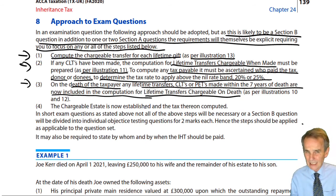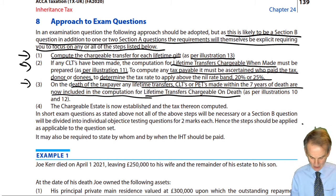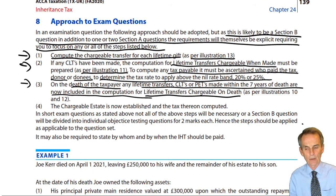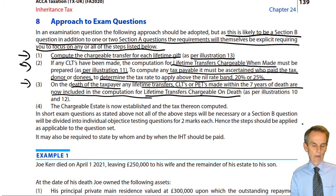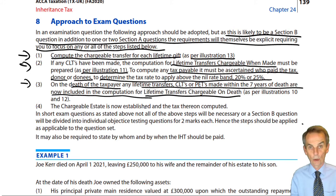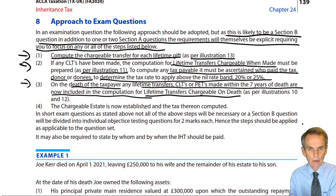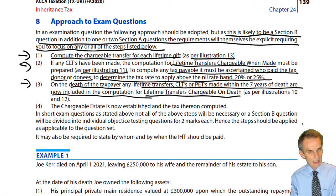If there are CLTs more than seven years before the date of death, they are not necessarily chargeable to tax, but they may impact — as we'll see in the final session — on that which is chargeable to IHT. So you will be bothered about CLTs made more than seven years before the date of death, not because there would be tax on them — because you've survived more than seven years, there will be no such tax — but given the cumulative nature of this tax, it will impact the amount of tax payable on those transfers that do fall within the seven years before death.